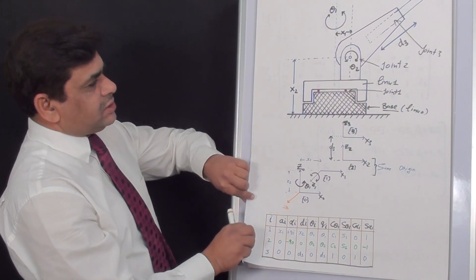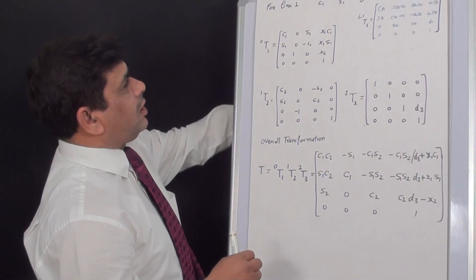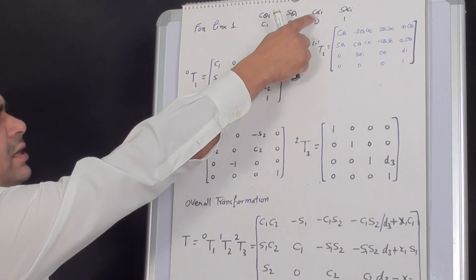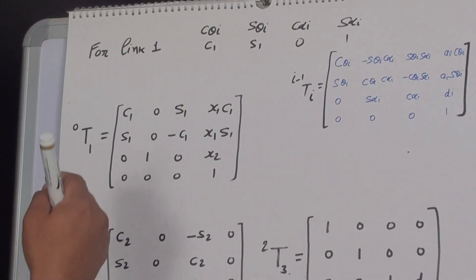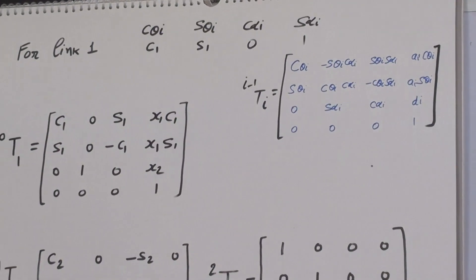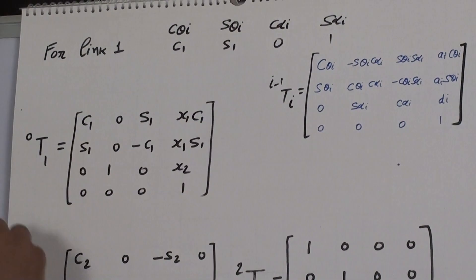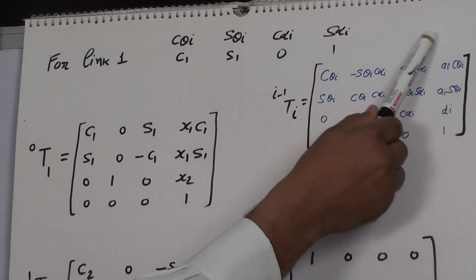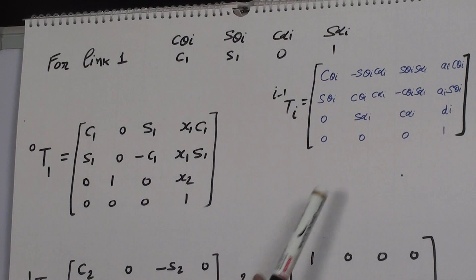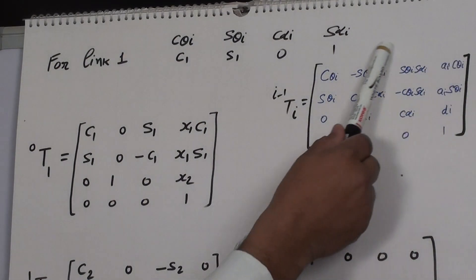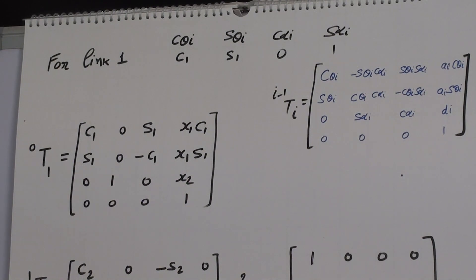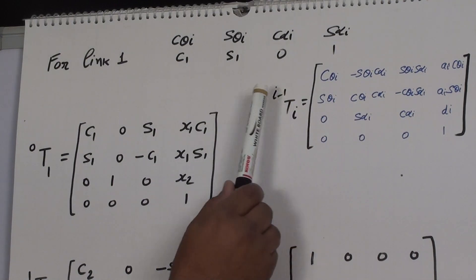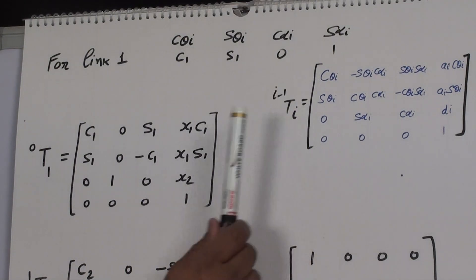From the previous section we already defined cosine of theta one, sine of theta one, cosine of alpha i, and the related values, taken from the table we discussed. The generalized homogeneous transformation equation combines all parameters through the relationship of adjacent links. This equation is very important for finding the relationship between the ith frame and the i minus one frame — defining the relationship between two different links joined to each other.